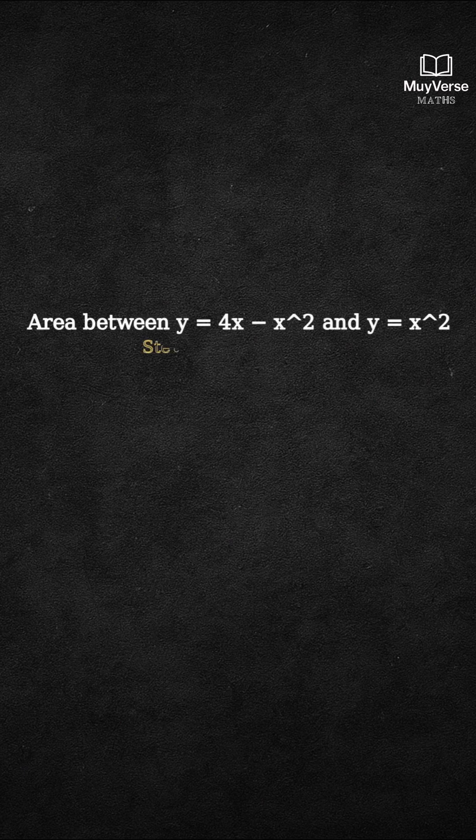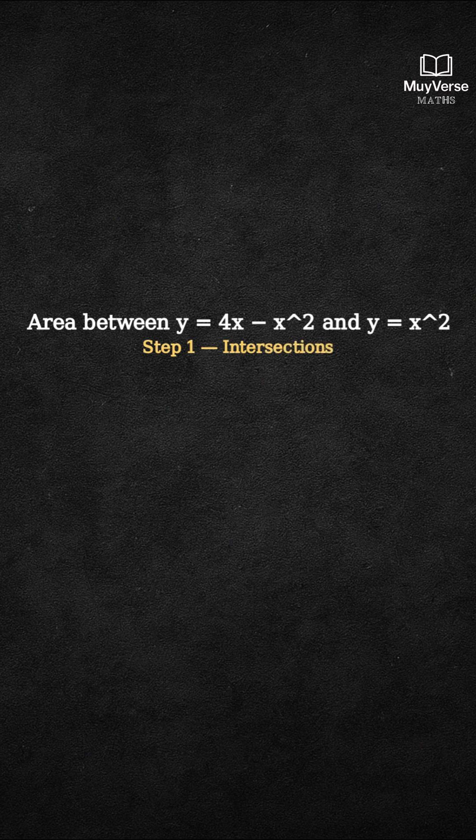Step 1, find their intersection points by setting the equations equal. x squared equals 4x minus x squared.